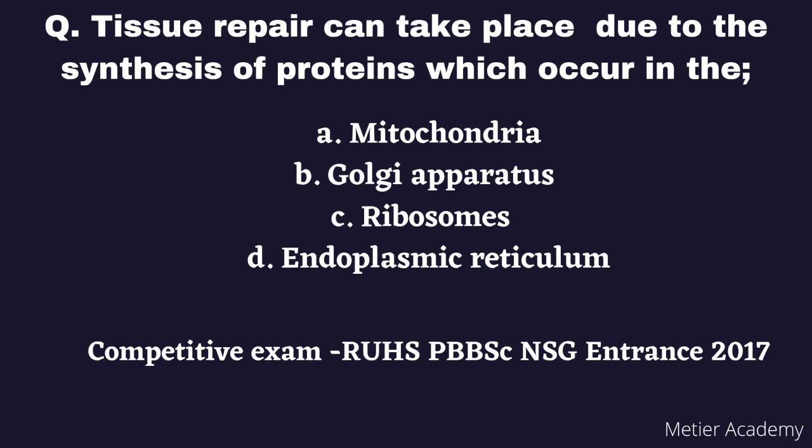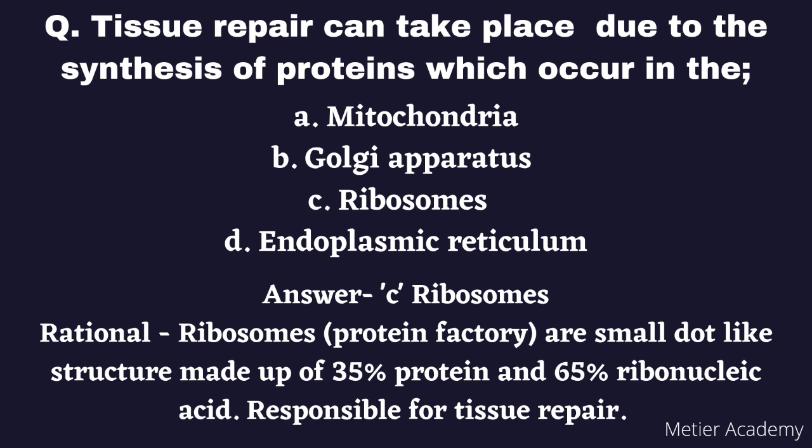The next question is: Tissue repair can take place due to the synthesis of protein, which occurs in. Options are: A) Mitochondria, B) Golgi apparatus, C) Ribosomes, D) Endoplasmic reticulum. This question was asked in the RUHS Post Basic BSc Nursing Entrance Exam, 2017. The correct answer is Option C, Ribosomes, also called protein factories — a small dot-like structure made up of 35% protein and 65% RNA, mainly used for tissue repair.